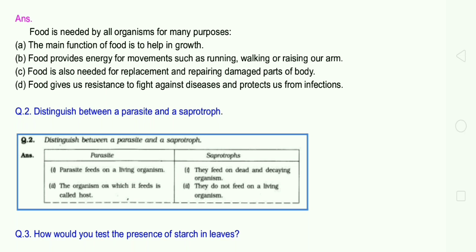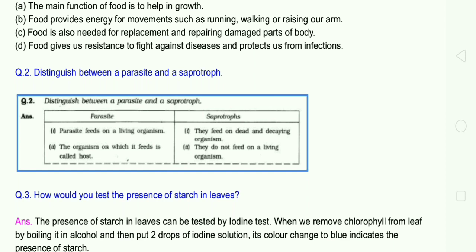First, the parasite is a living organism, for example Cuscuta. If you have green color, you can absorb your food. Then saprotrophs feed on dead and decaying matter. Parasites have a host, they feed on living organisms. Saprotrophs do not feed on living organisms.